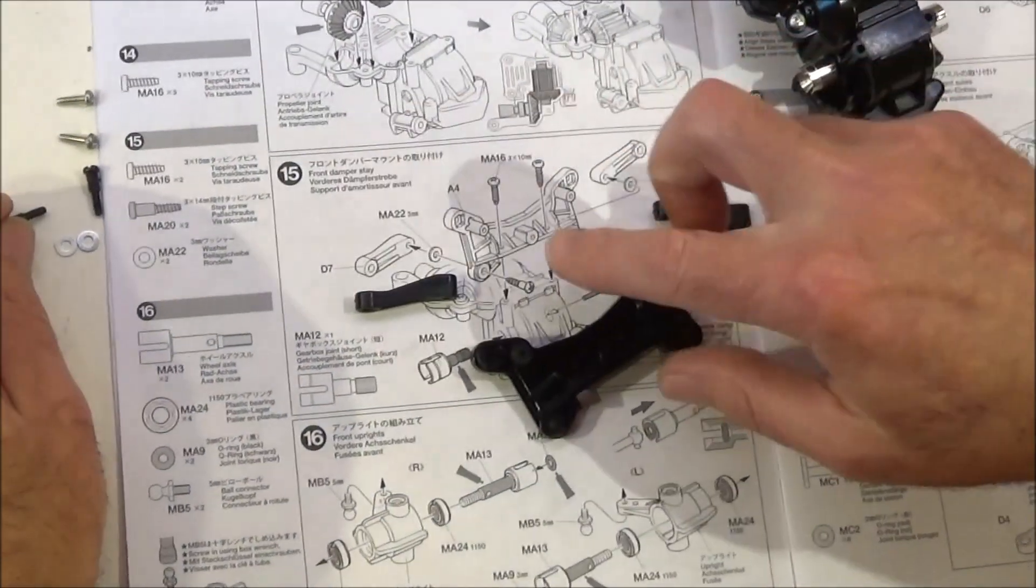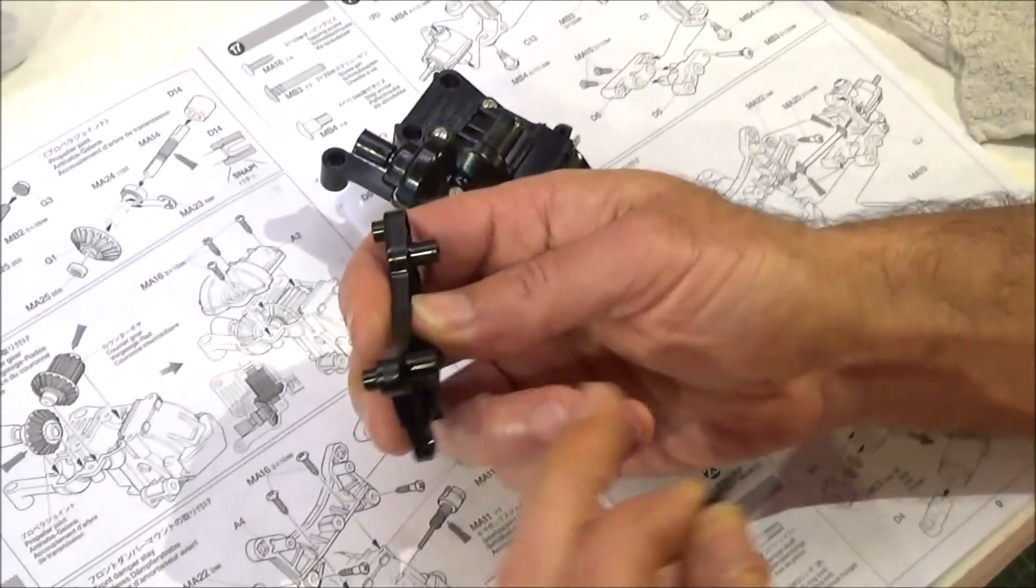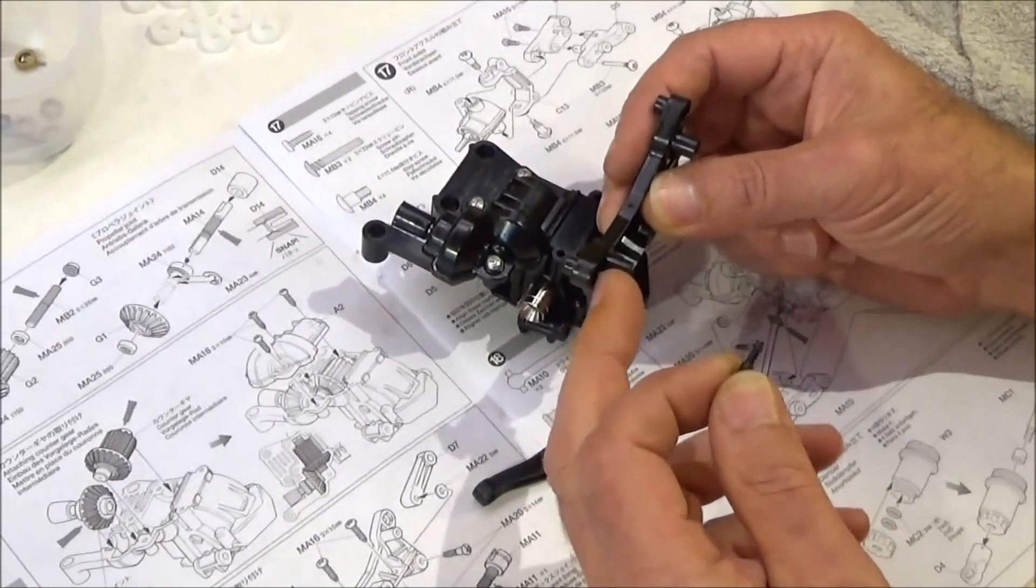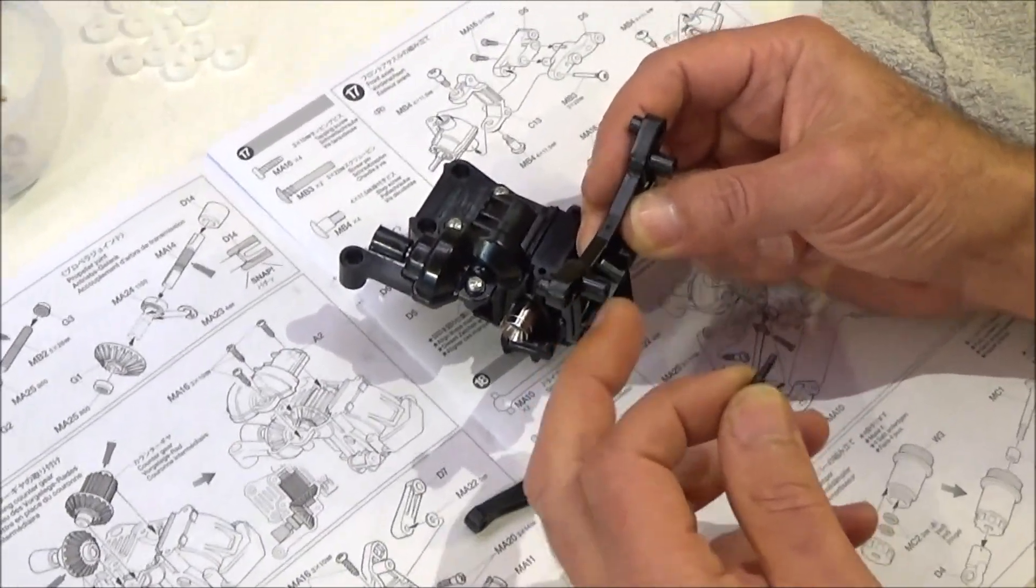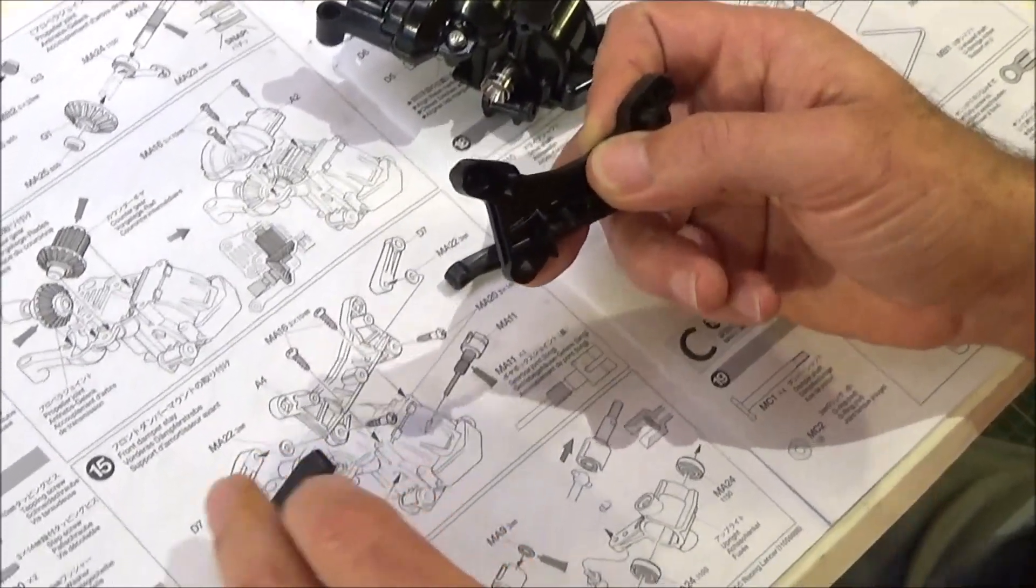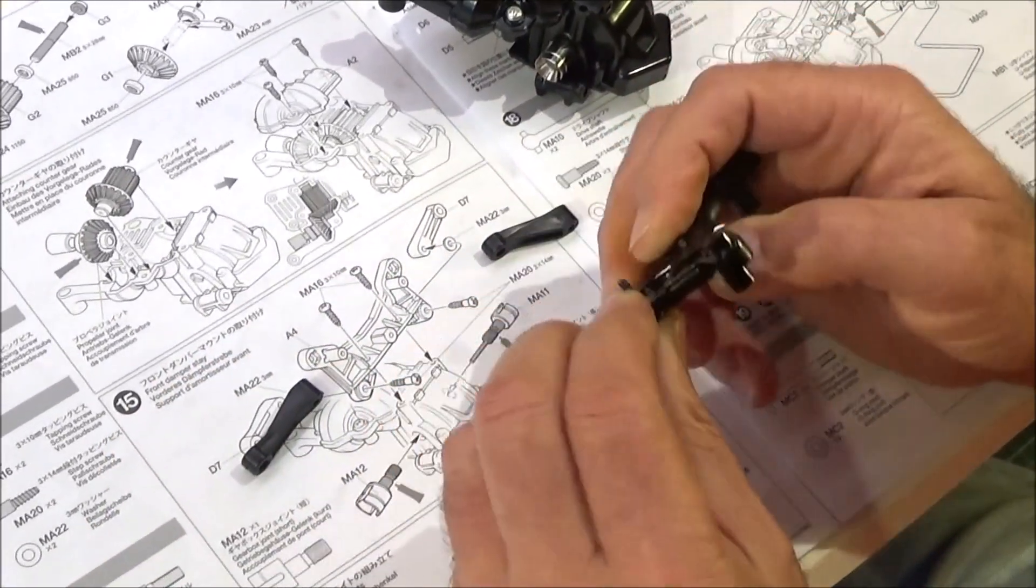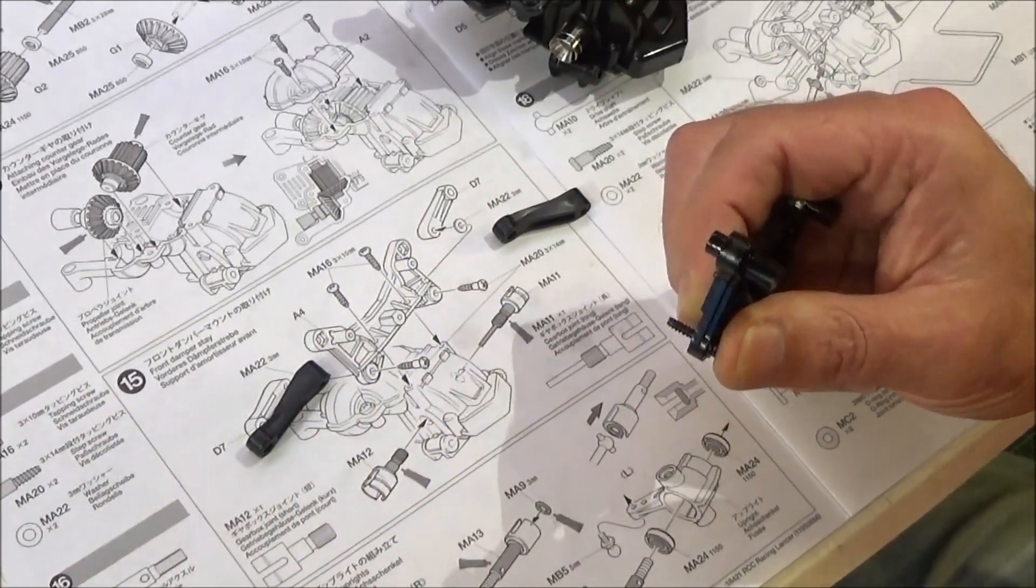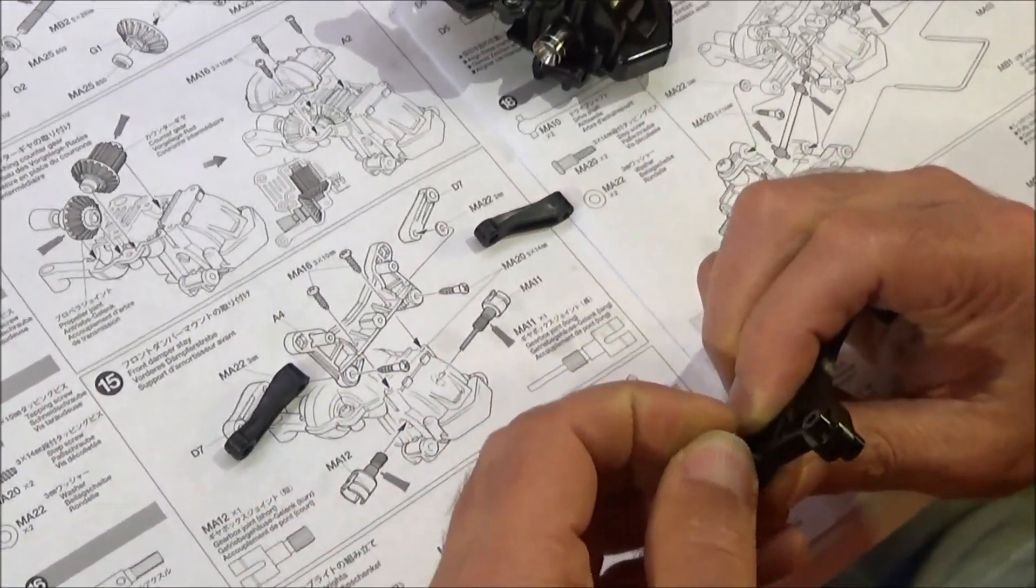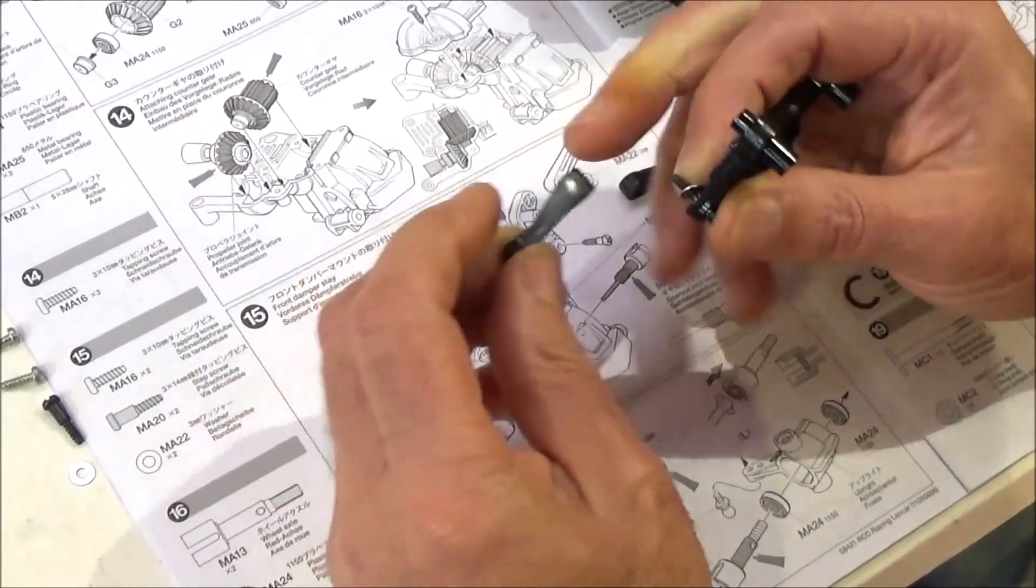Step 15 is the front damper stay or shock tower as we call them. Make sure you've got this the right way around. It's going to go with these protrusions pointing towards yourself. Like so. We're going to fit the top suspension arms on there. Through this hole. So get your step screw. Make sure you put a washer on the back. And then attach the top arm like so. The thicker bit on the shock tower.